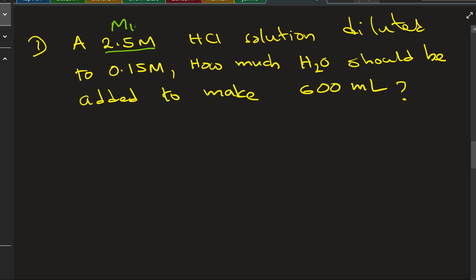Hello there, let's get started with this question. A 2.5 molar HCl solution is diluted to 0.15 molar. How much water should be added to make 600 mL? V1 minus V2 equals the volume of water added or evaporated.